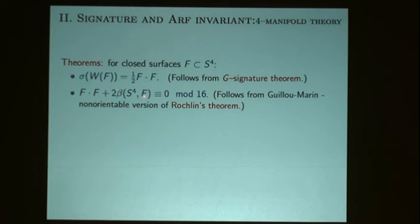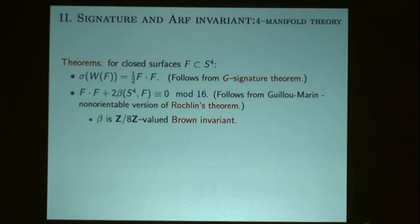Another result is a generalization of Rokhlin's theorem for four-manifolds. It says that the self-intersection of F plus twice a certain invariant beta is zero mod sixteen. The adjustment needed in the non-orientable setting was discovered by Guillou and Marin. Beta is called the Brown invariant, taking values in Z8.